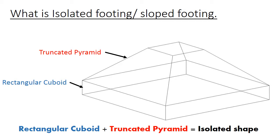Here in the picture you can see that isolated footing is made from a rectangular cuboid and a truncated pyramid. You know that a rectangular cuboid has 3 dimensional units: its length, width, and depth. But the truncated pyramid is new for you. A truncated pyramid also has 3 dimensional units — it has two rectangles of different size at different planes and lines connecting all 4 sides of both rectangles. This makes a truncated pyramid, which you can easily understand in this picture showing the isometric view of isolated footing or sloped footing.